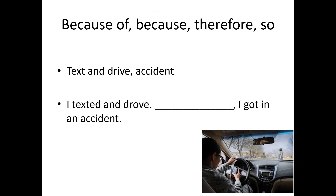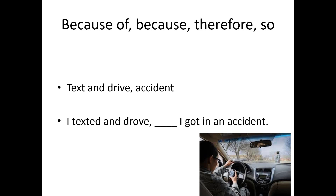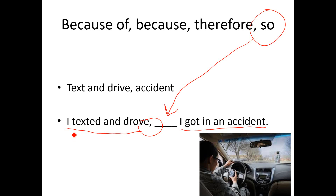Same situation. 'I texted and drove. [blank], comma, I got in an accident.' Here I see a period, so I have two sentences, and 'therefore' will show the relationship between ideas in two sentences — so 'therefore' goes in the blank. Next: 'I texted and drove' is a complete idea, 'I got in an accident' is a complete idea, and I have a comma. We need 'so' for this one — 'so' is used when I have two complete ideas and join them together with a comma plus 'so,' the coordinating conjunction.